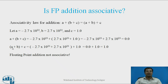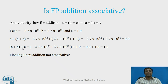Left hand side: a plus (b plus c) equals minus 2.7 into 10 to the power 23, plus (2.7 into 10 to the power 23 plus 1.0), which leads to 0.0. Right hand side: (a plus b) plus c equals (minus 2.7 into 10 to the power 23 plus 2.7 into 10 to the power 23) plus 1.0, which leads to 1.0. The left hand side value is 0.0 and the right side value is 1.0. They are not equal, and hence floating point addition is not associative.